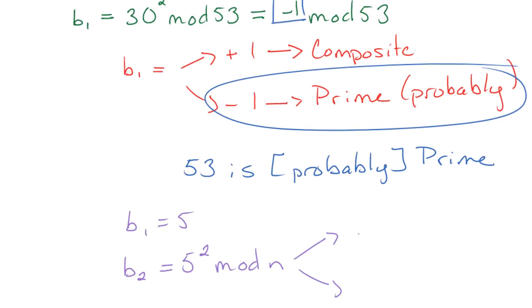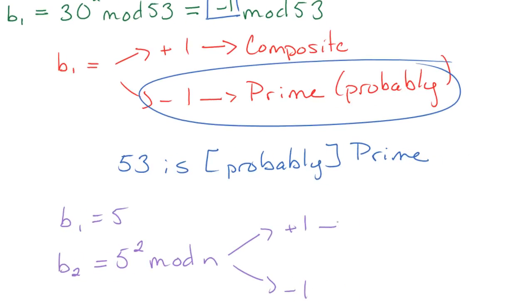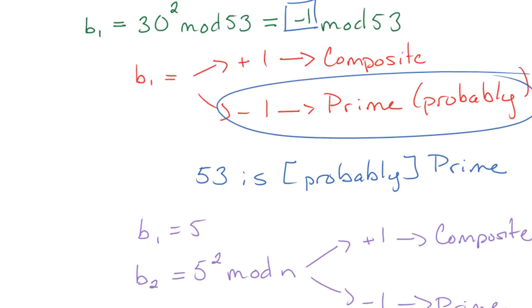And then b2 we're going to look at in the same way as b1. We want to know, is it positive 1 or negative 1? If it's positive 1, composite. If it's negative 1, probably prime.